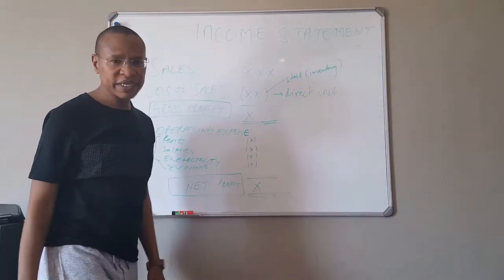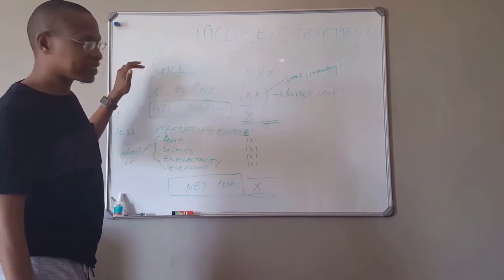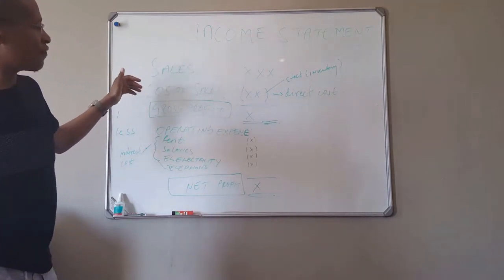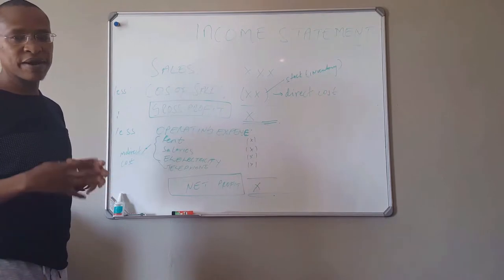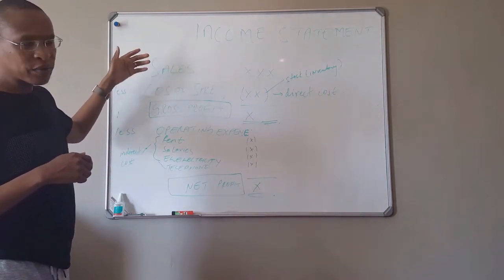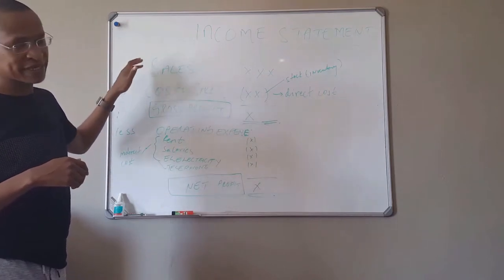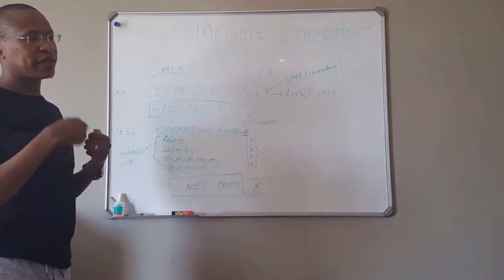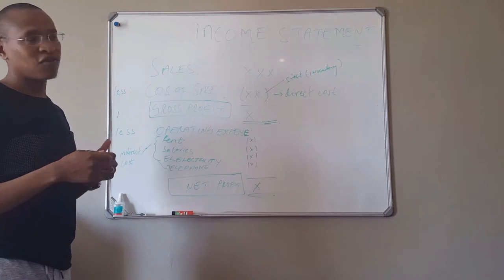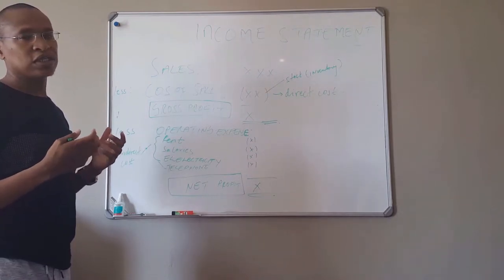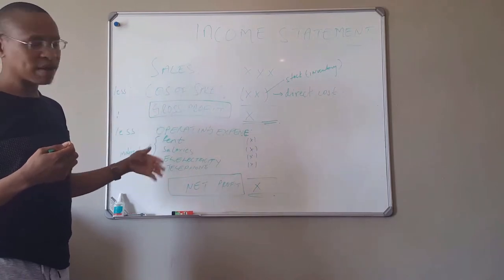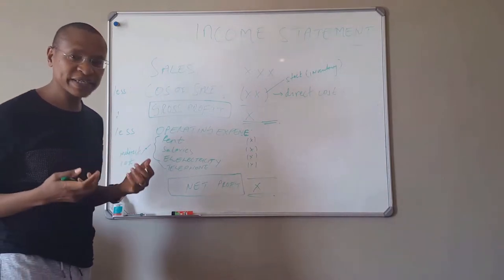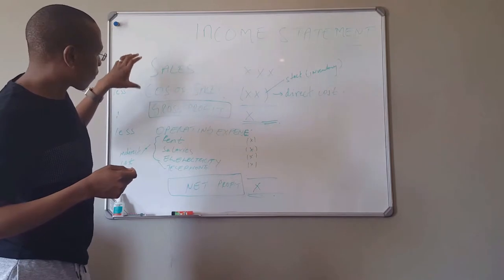In the income statement you would have sales or sometimes it's called revenue, and then you'll have cost of sales and the gross profit. Sales is not profit - most people mix sales with profit. Sales is basically the income or the revenue of the company when a company sells something. It does not yet include expenses. Once you include the expenses, then you can talk about profit.